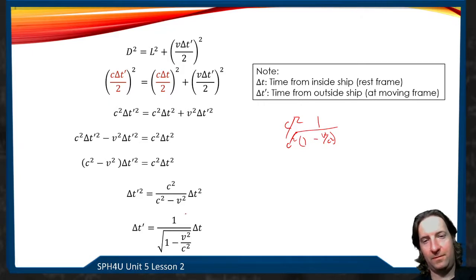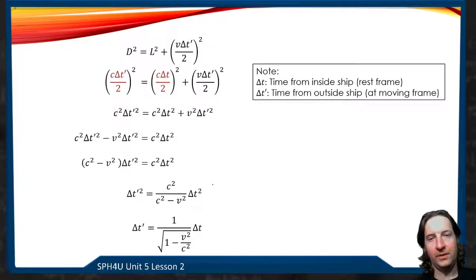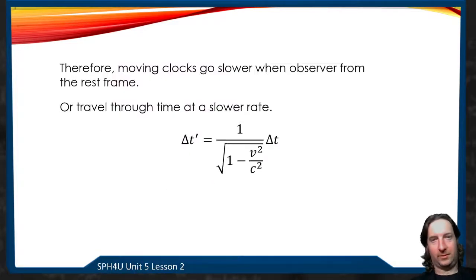Now, this is a very important little coefficient, which we're actually going to call gamma. Therefore, what this is telling us, for this to work, for the speed of light to be constant in both frames of reference, what has to happen is the clocks inside the rocket from the observer outside of the rocket have to slow down.